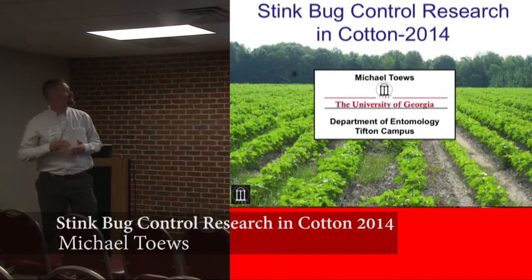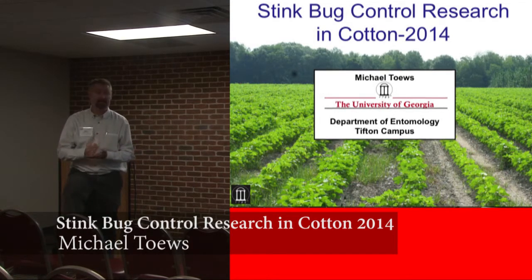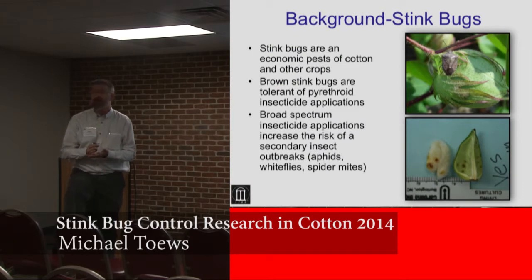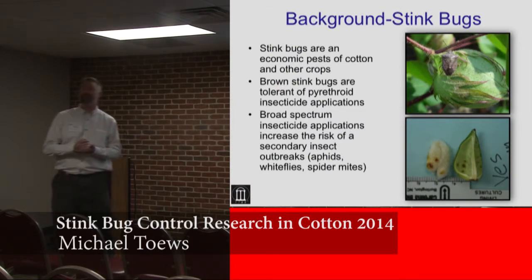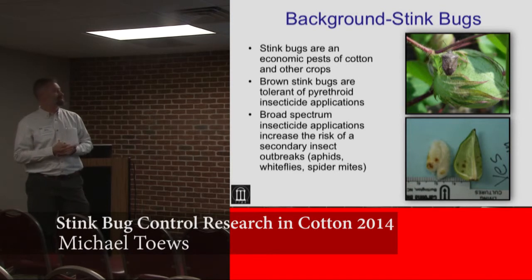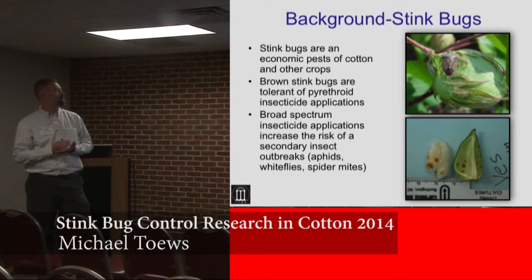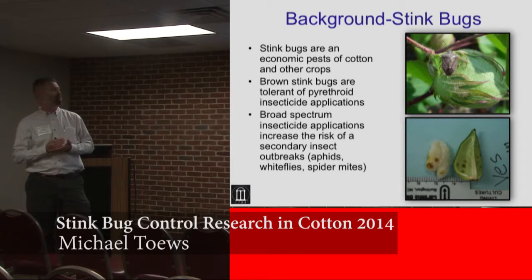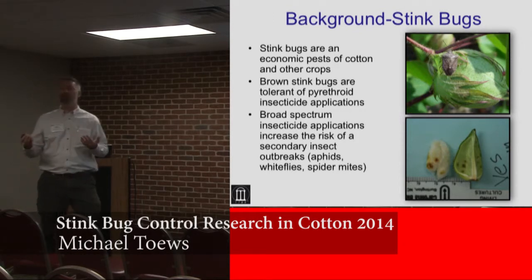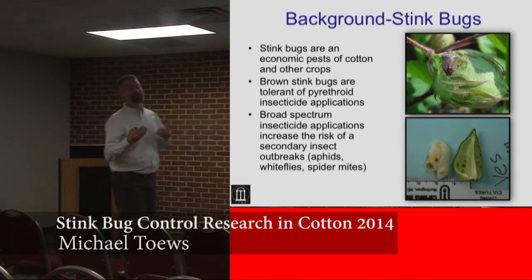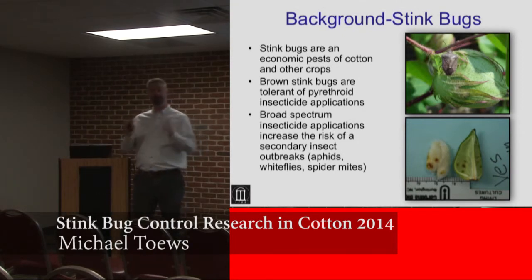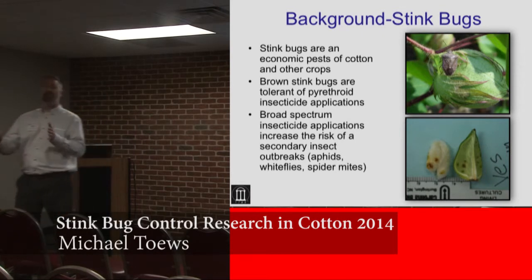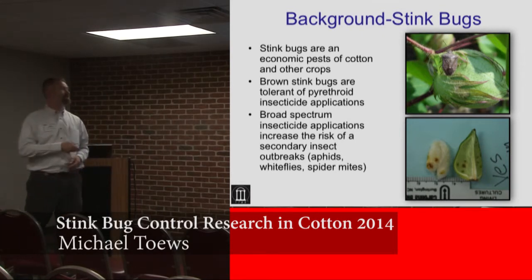Stink bugs are clearly economic pests. It's not just cotton — they feed on a lot of different types of crops in our cropping systems. The brown stink bug tends to be more problematic because he's tolerant of pyrethroid applications, which puts us into a mode where we need to go after him with an organophosphate. When we're putting out Bidrin, for example, that tends to increase our risk of flaring some other pests that may actually be more expensive to control than the stink bugs. So we walk a tight line when putting out different types of stink bug treatments.